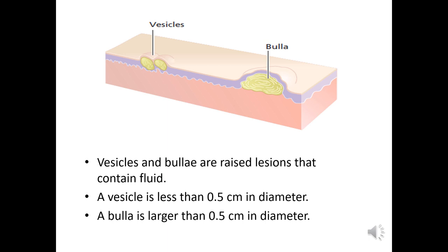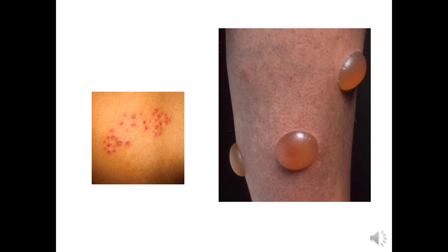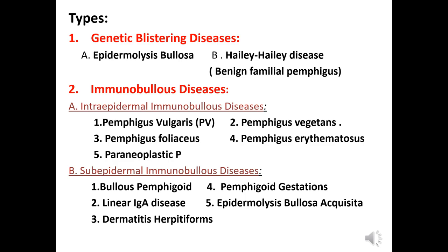There are two types of blisters: either a vesicle, which is less than half a centimeter in diameter, or a bulla, which is larger than this. The types of bullous skin disorders include two main categories: genetic blistering diseases, like Hailey-Hailey disease or epidermolysis bullosa, or immunobullous diseases, which constitute the major group.